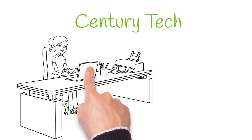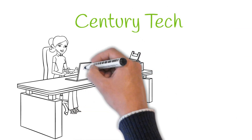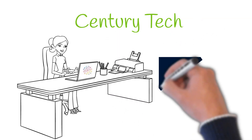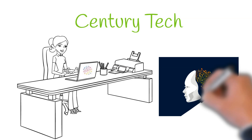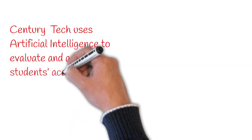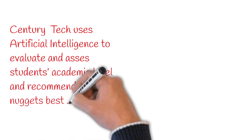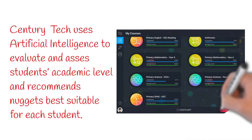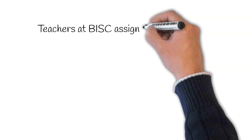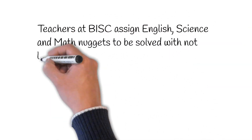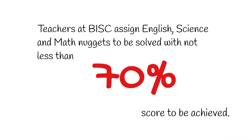Century Tech. BISC's second most frequently used platform is Century Tech, which is a tested artificial intelligence learning platform that helps students to understand, learn, or revise any subject of their liking. Century Tech uses artificial intelligence to evaluate and assess students' academic level and recommends nuggets best suitable for each student. Teachers at BISC assign English, science, and math nuggets to be solved with not less than 70% score to be achieved.